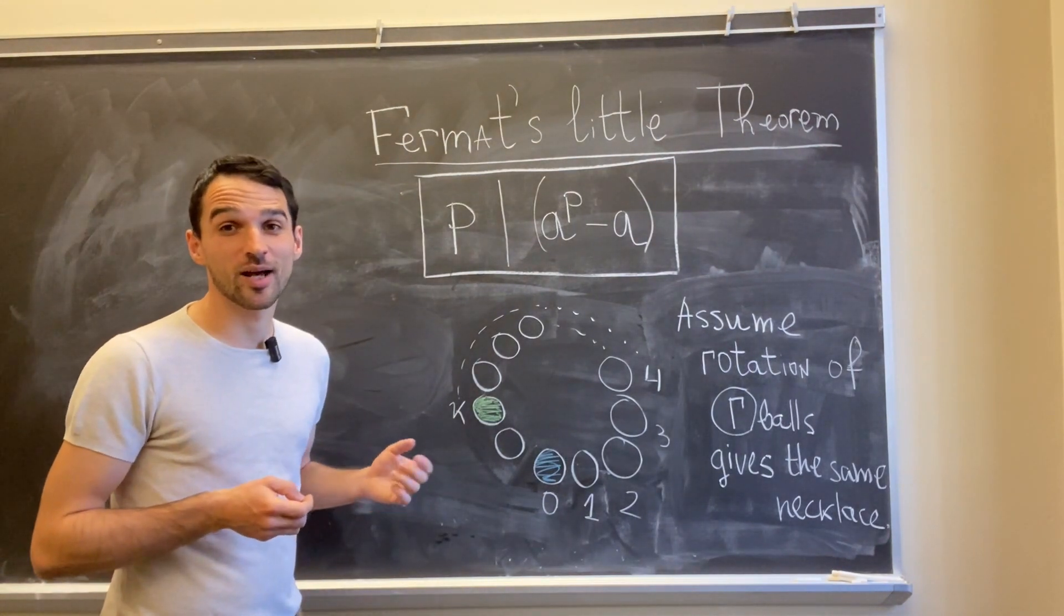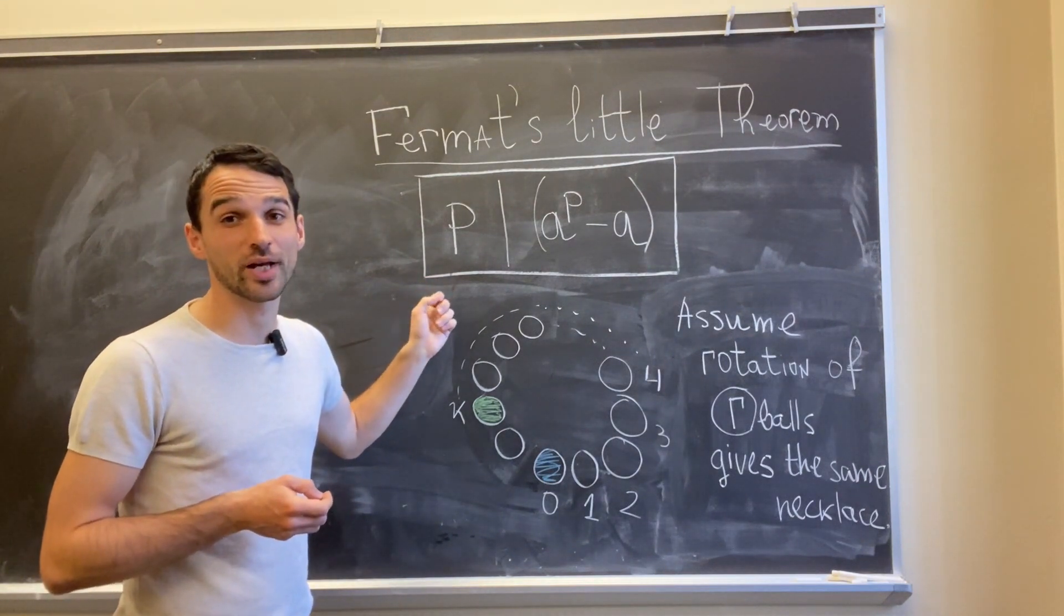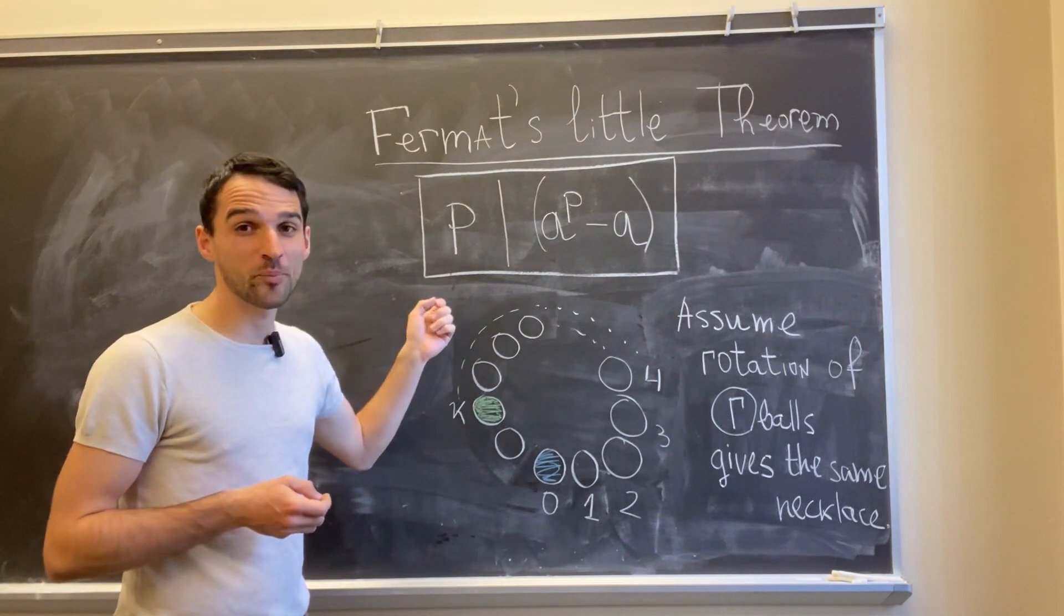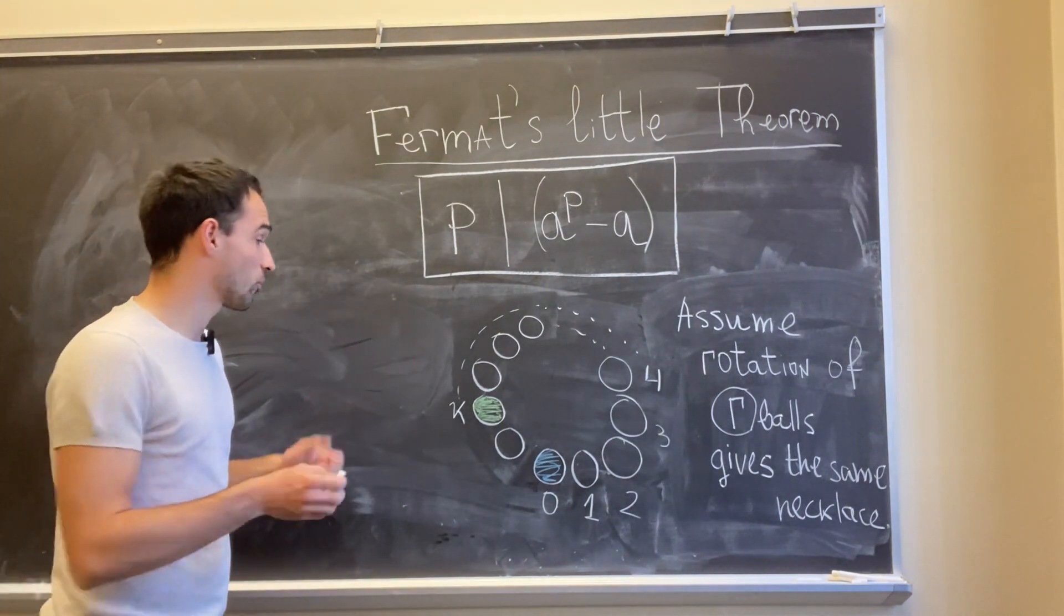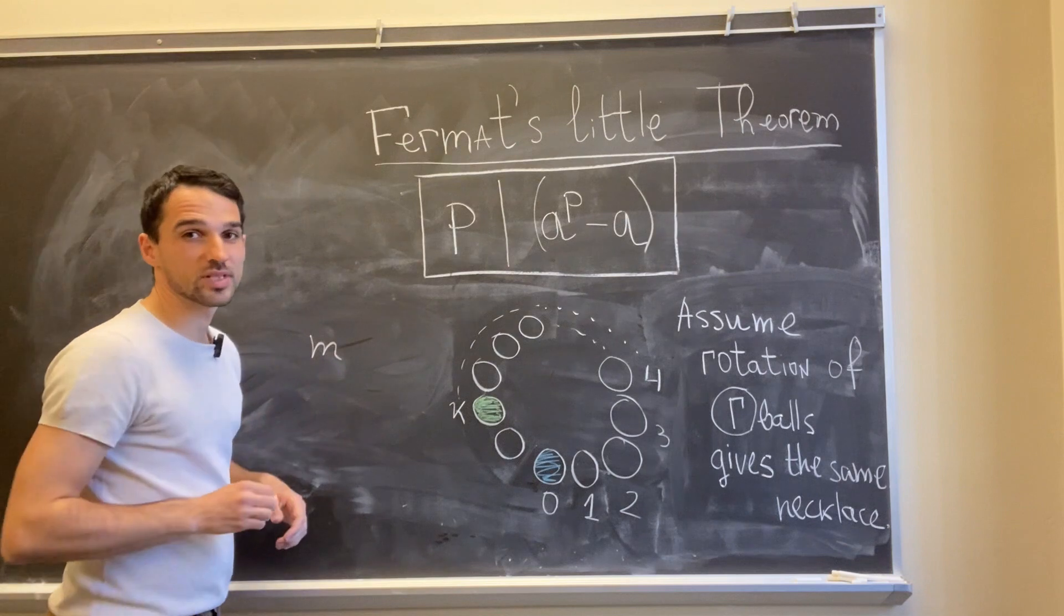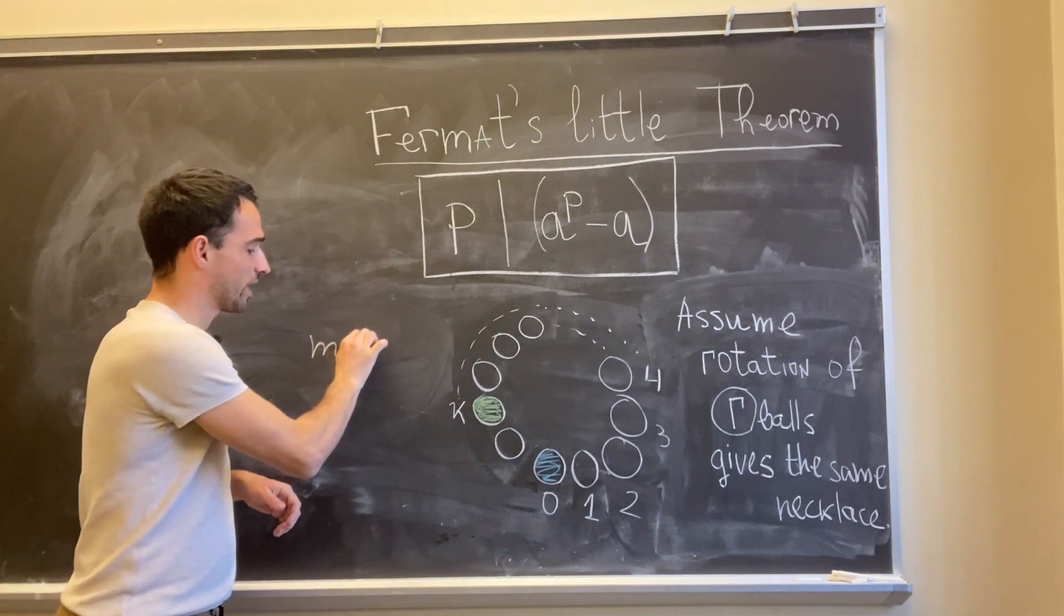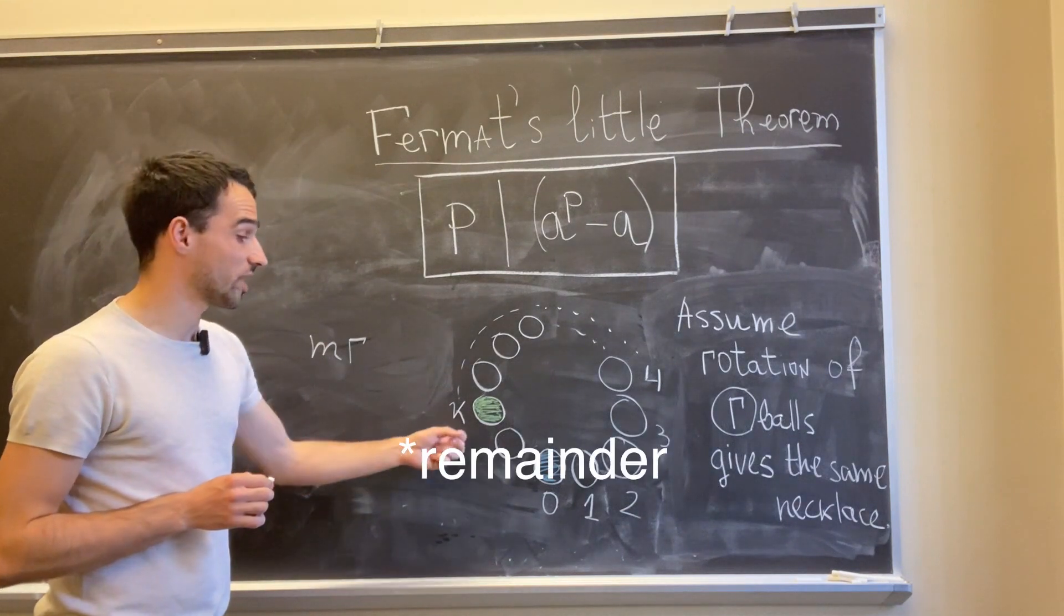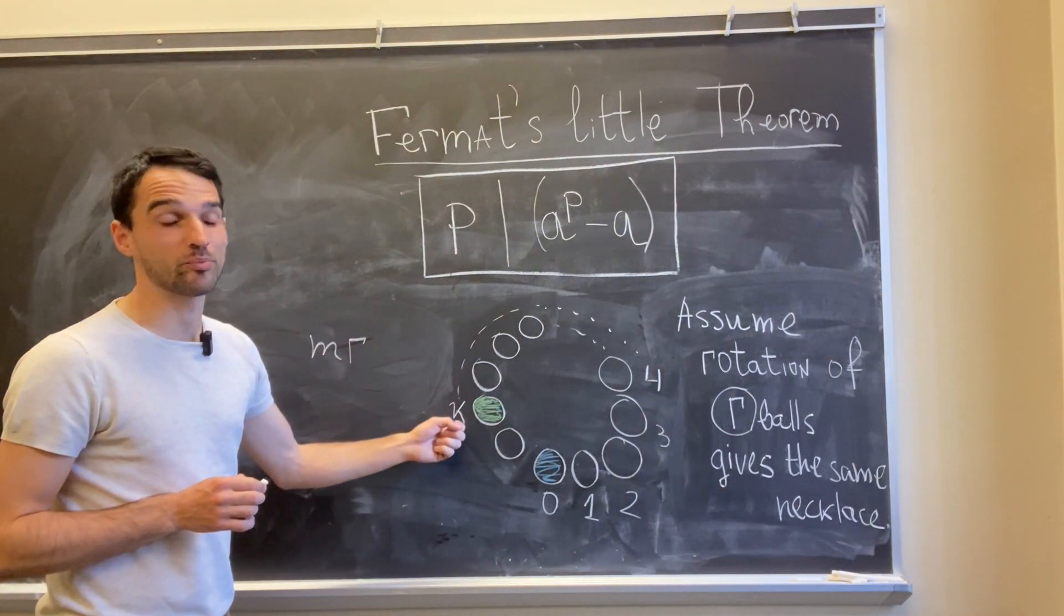The contradiction comes because p is a prime number. Remember, I haven't still used this fact. When p is a prime number, I always have some number m such that when I multiply m by r, I get some number which has the same divisor as k when I divide it by p.